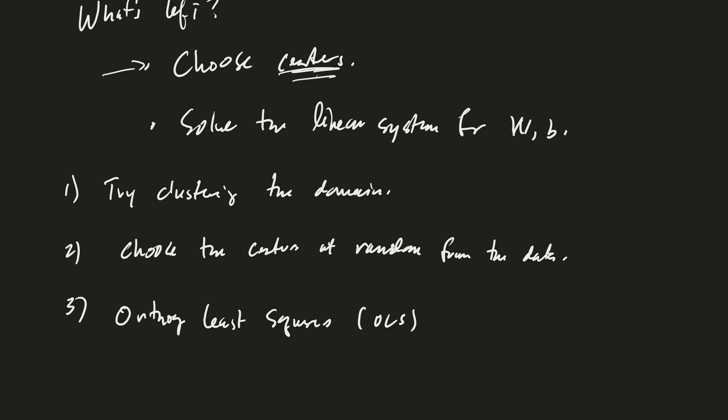Orthogonal least squares is kind of a nice way to find the centers. Like I said, this is going to be later if we have time. But these two methods are pretty easy for us to implement right now, and so those are the ones that we're going to focus on. In fact, we'll just pick a few at random to start with, and then later on we'll try clustering the domain.